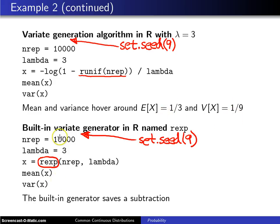And even though the mean and variance will hover around 1 third and 1 ninth, you'll be surprised to see that they don't give you exactly the same value. Well, what's done internally inside of R and inside of the REXP function here is they actually eliminate this 1 minus here.